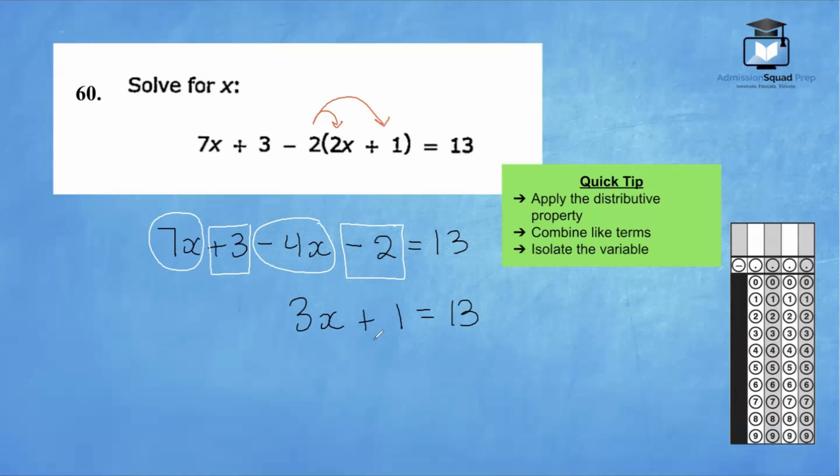We only have two more steps to isolate the variable. At this point, we're going to perform the inverse operation. Right now we're adding 1. So the opposite of that is going to be to subtract 1 on both sides of the equal sign right here. So 1 minus 1 cancels out and we have 3x equals 13 minus 1 is 12.